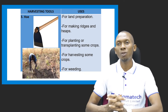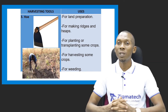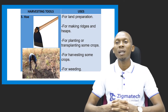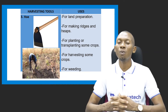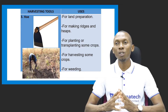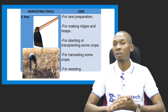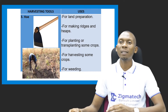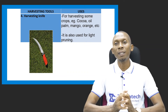The hoe is another harvesting tool which can be used for land preparation, making ridges and heaps, planting or transplanting some crops, harvesting crops, and weeding. We have the harvesting knife, which can be used for harvesting crops like cocoa, oil palm, mango, and orange. It can also be used for harvesting tall fruits from tree crops and for light pruning.